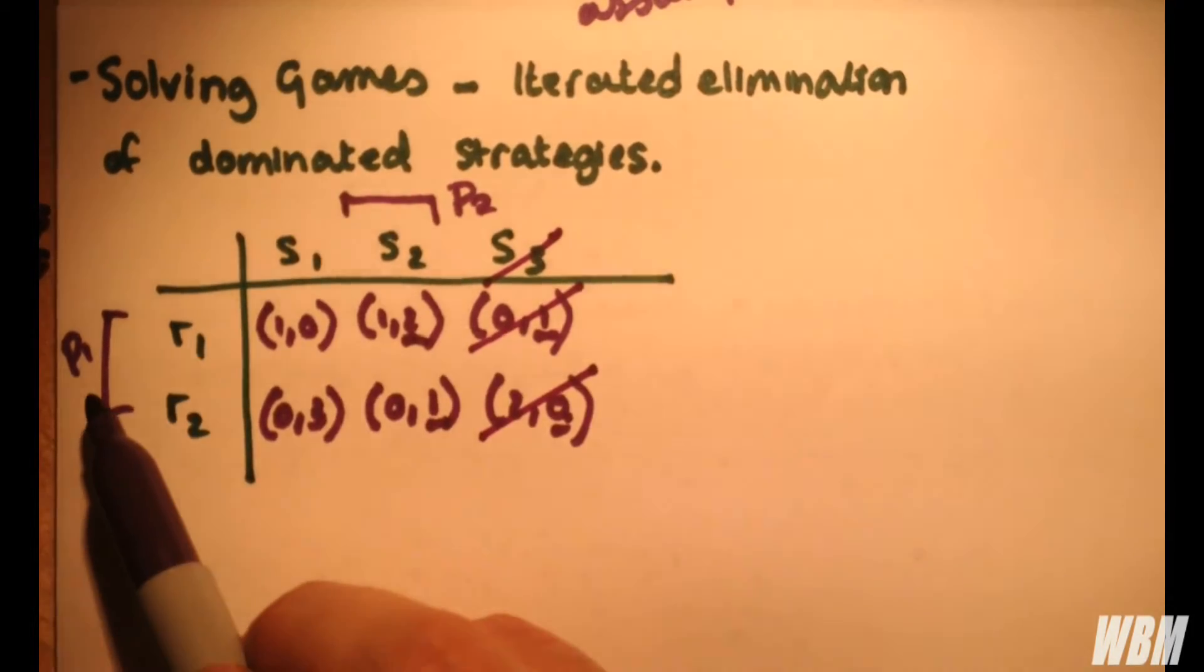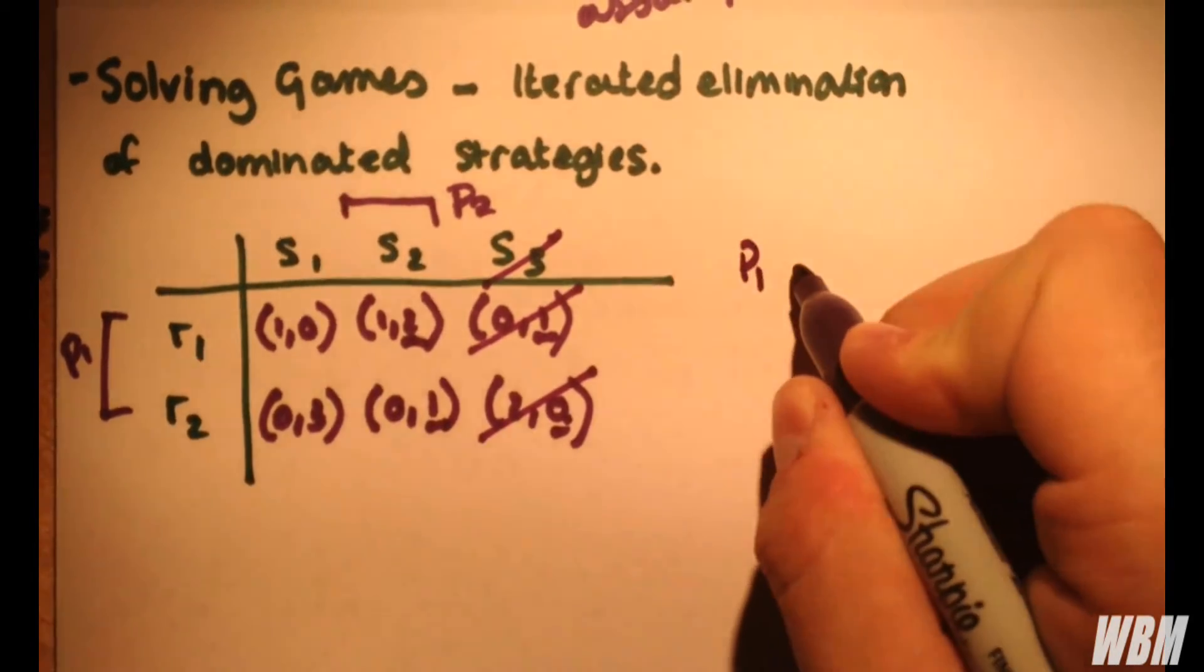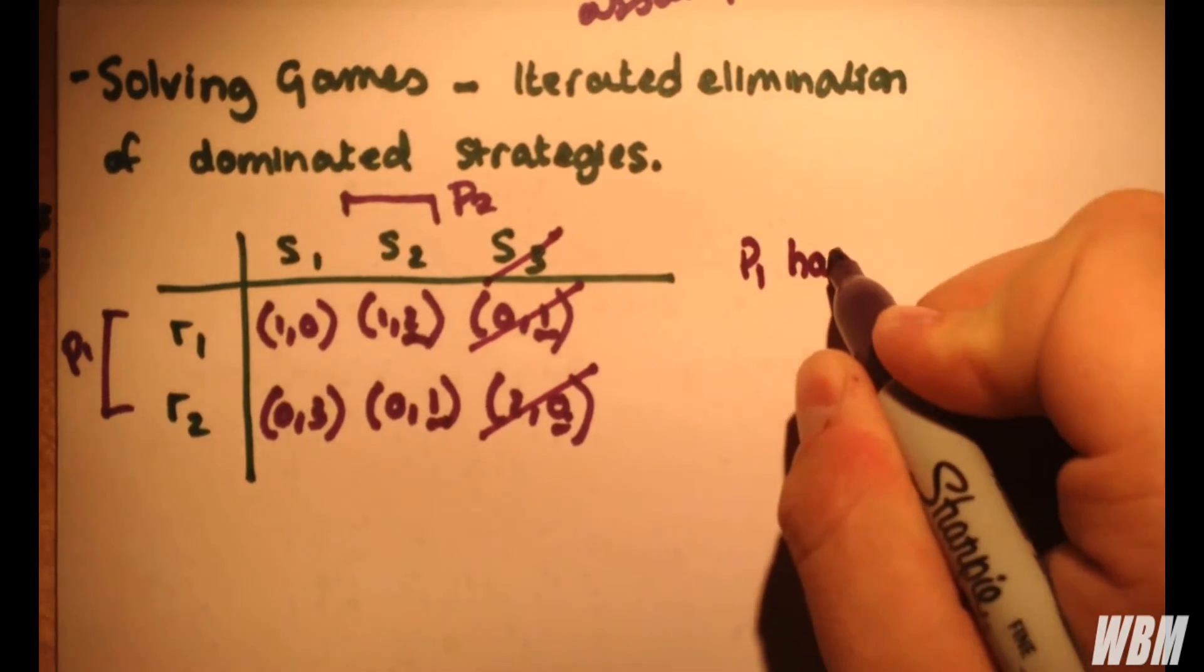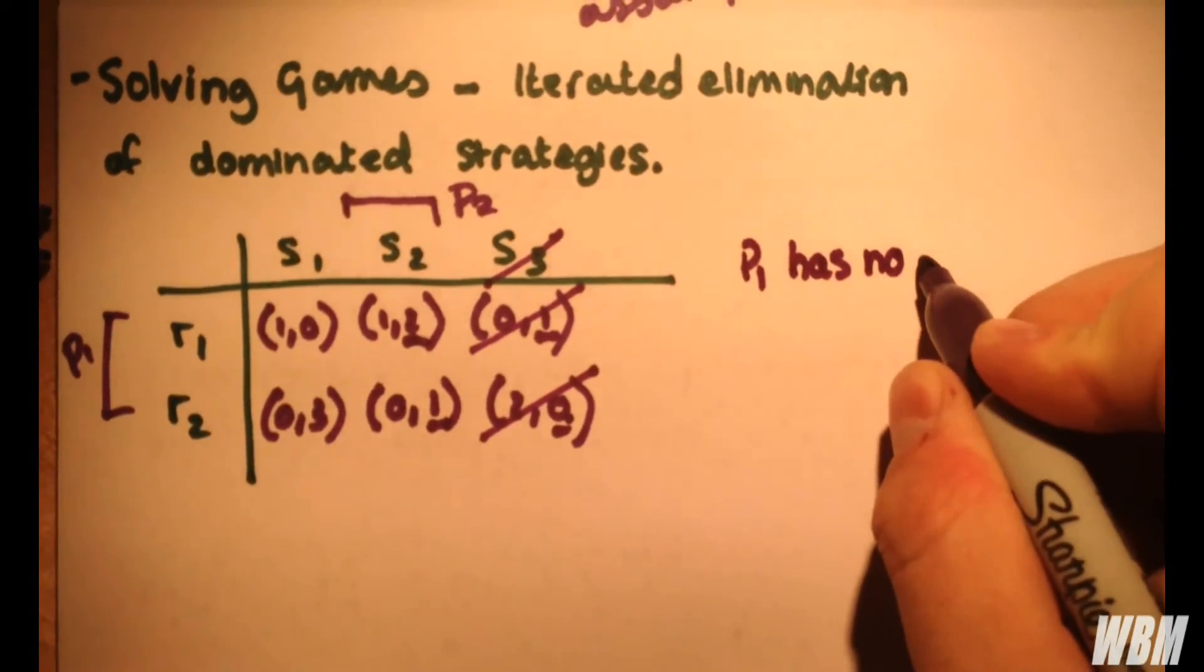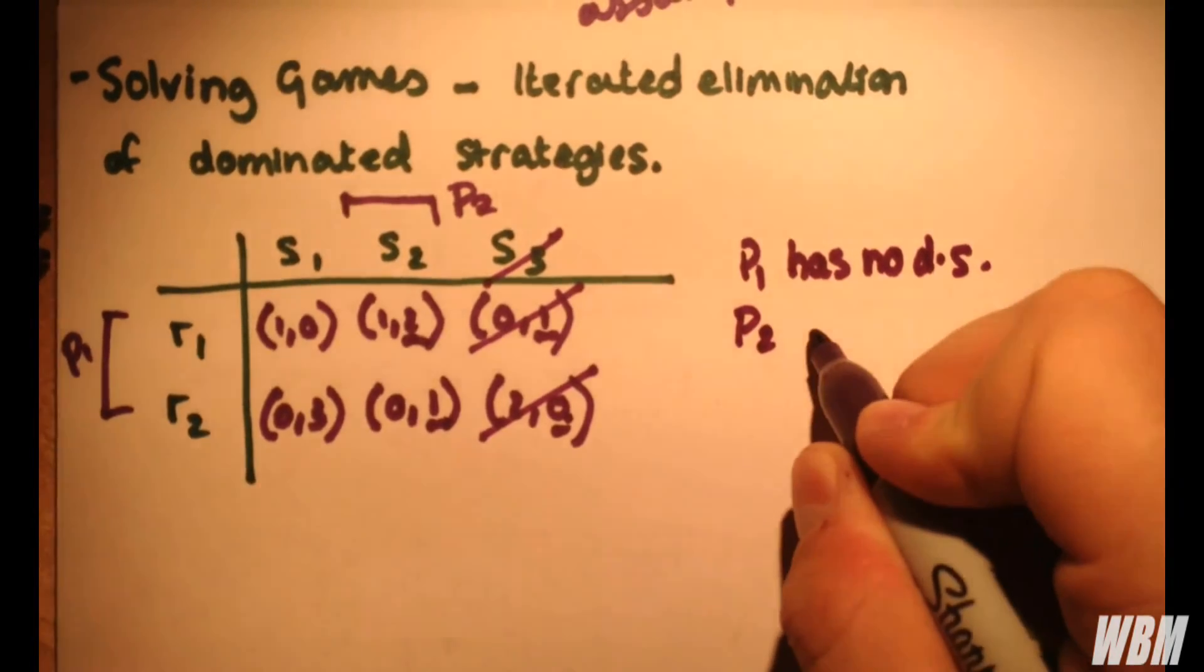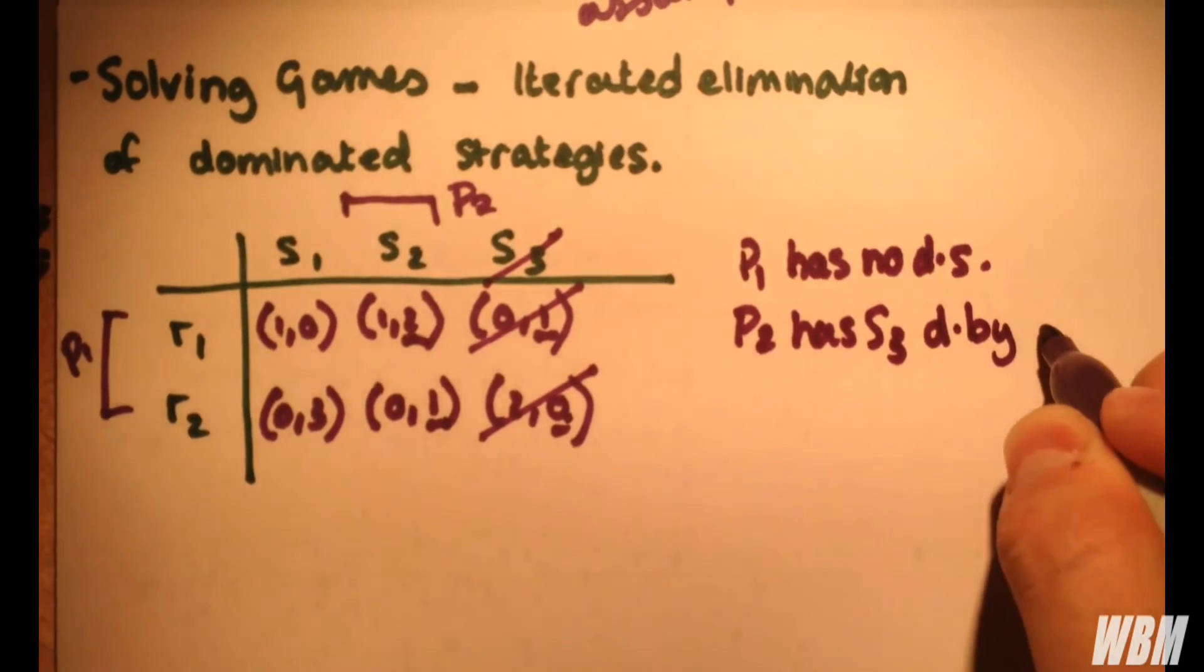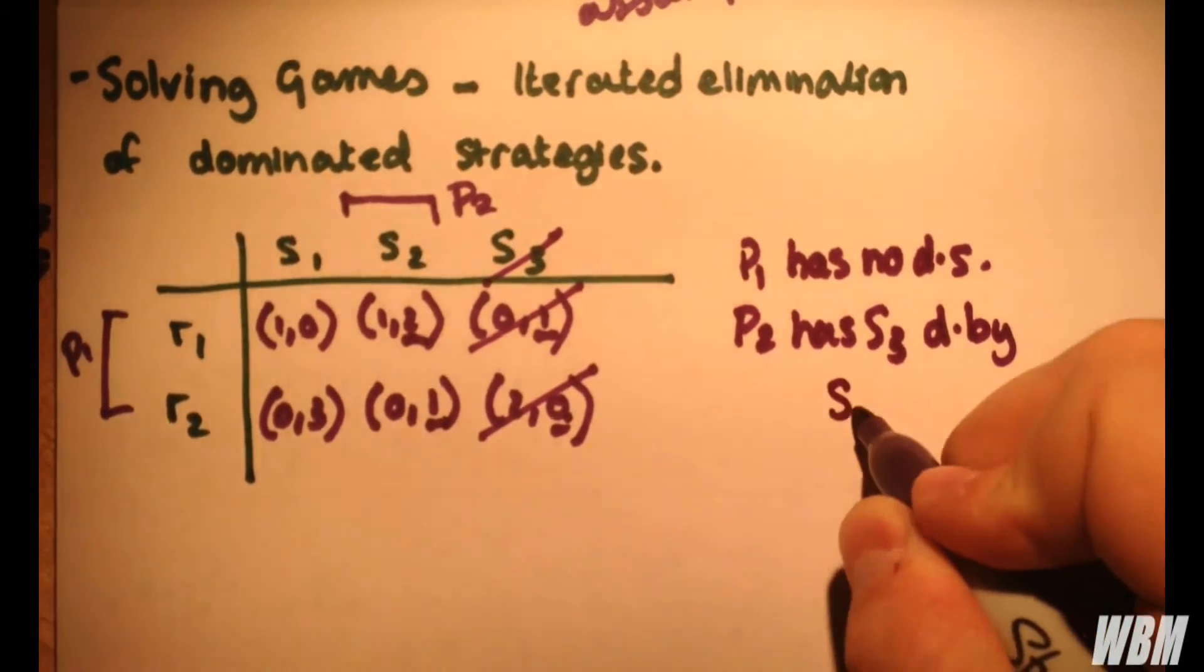Now we revert back to player 1. So I'll just take a quick note of this here. So player 1 had no dominated strategies. And then we notice that player 2 has S3 dominated by S2.